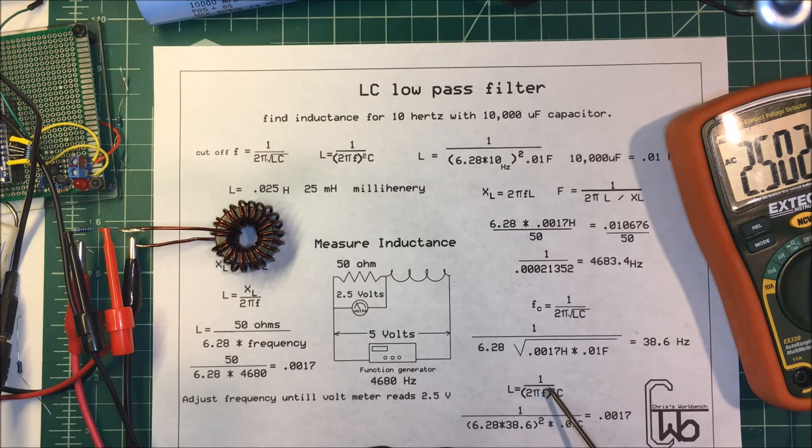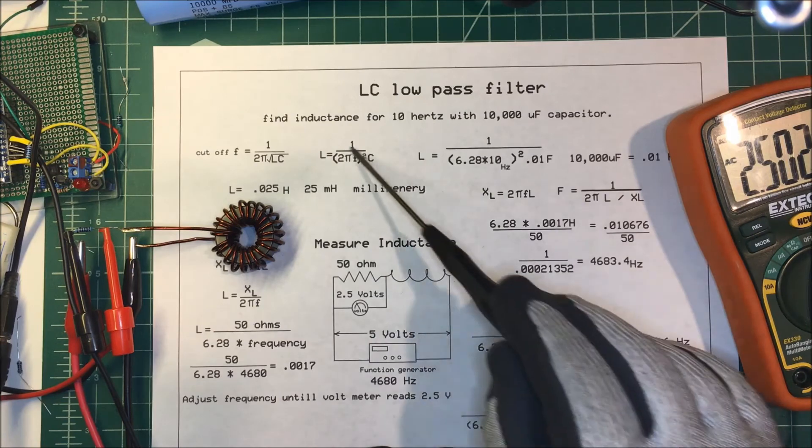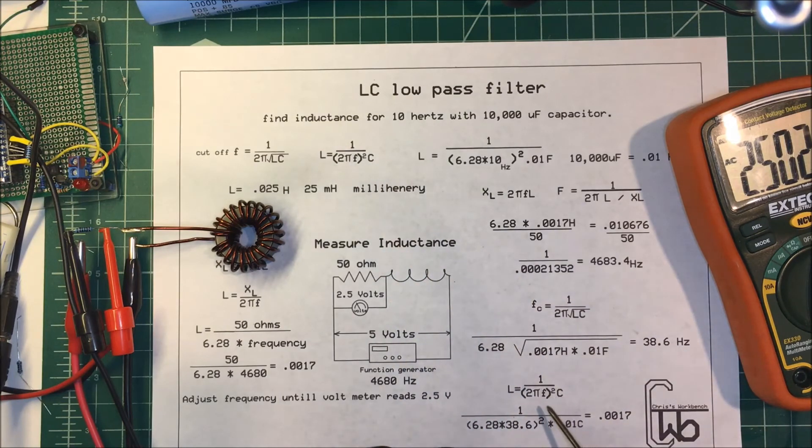To verify this formula is correct, now that I know the frequency and capacitance, I'll plug those values in. That's 6.28 times 36.6 squared times the capacitance, which comes up to 0.0017 - just a check on that.